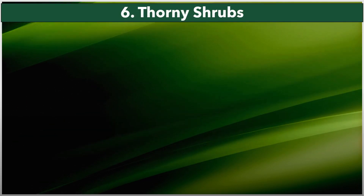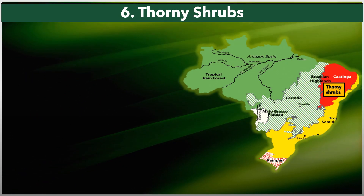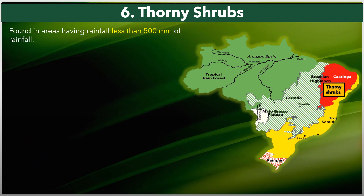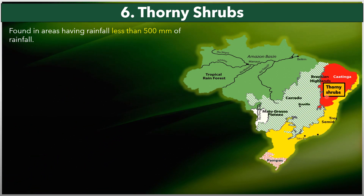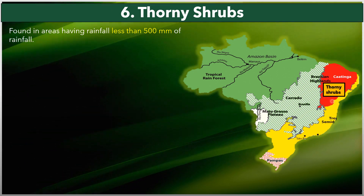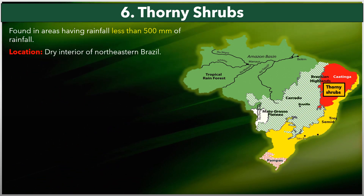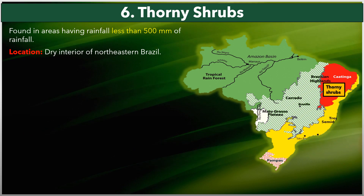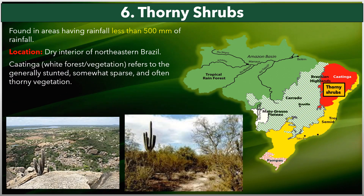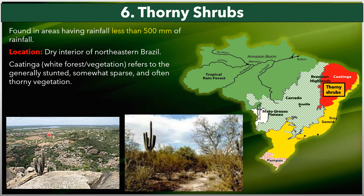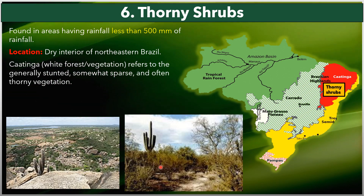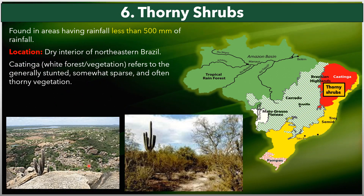The last type of forest is thorny shrubs, found mostly in areas receiving less than 500 millimeters of rainfall. They lie in the north eastern part of Brazil. This vegetation is also called Caatinga, meaning white forest or white vegetation, and refers to generally stunted, somewhat sparse, and often thorny vegetation, as seen in the picture.